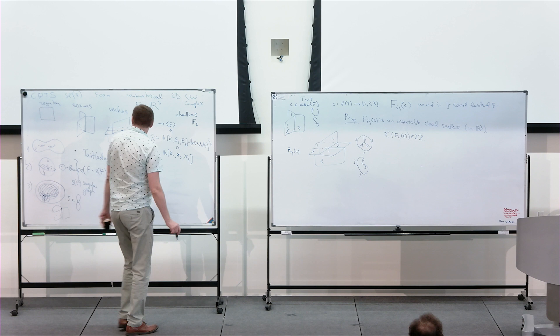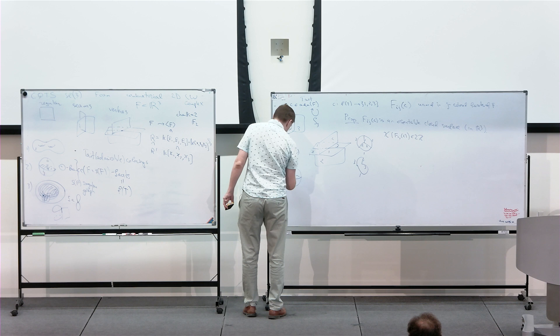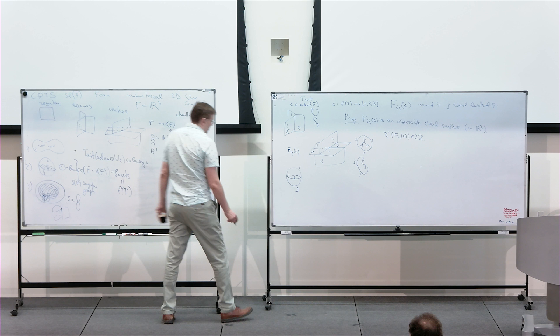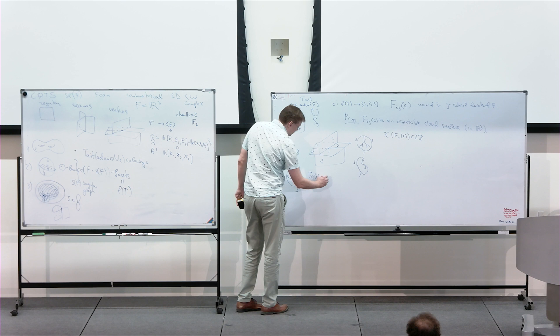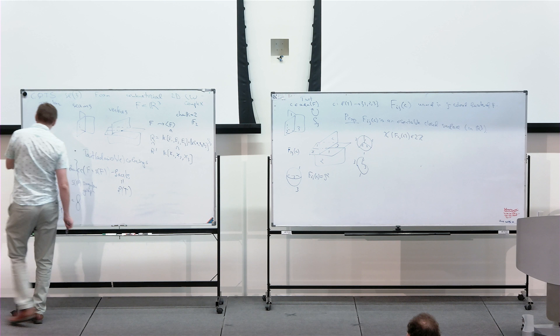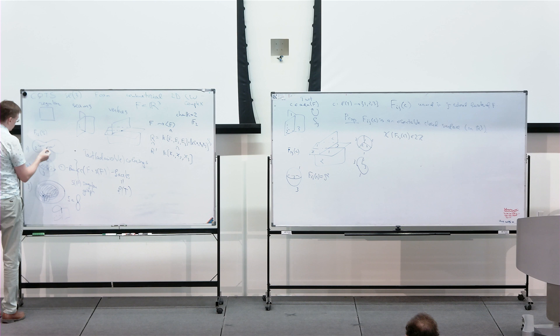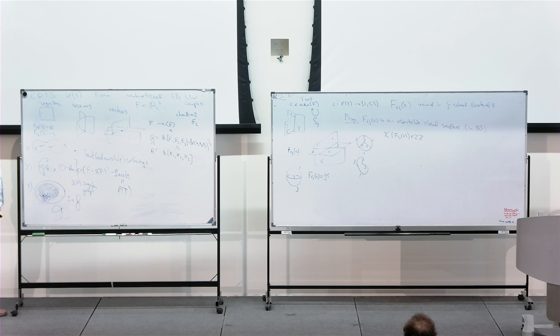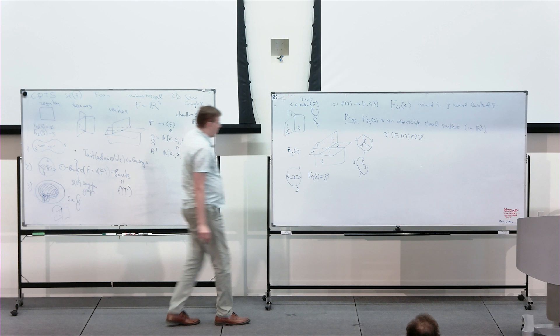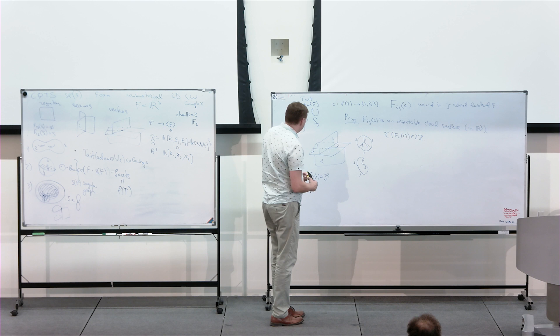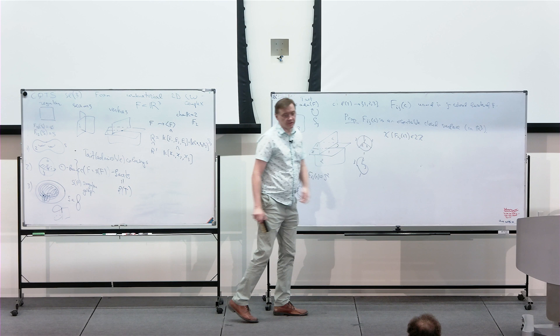For example, for the theta foam, no matter what the coloring is, any surface F_ij for that coloring is a 2-sphere. On the other hand, if you color the plain surface S by color 2, then F_12 of S is S, but F_13 of S is the empty surface. So for any coloring C, we get three surfaces F_12, F_13, F_23, all with even Euler characteristic.